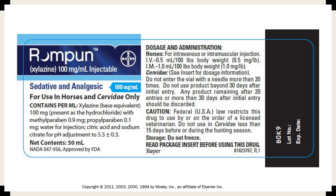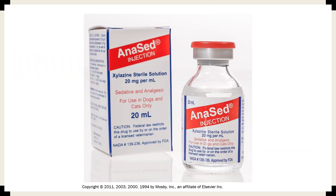Another formulation of Rompun is available as a 100 mg per ml injectable solution, used as a sedative and analgesic in horses and other animals. Anacet is also another brand name of silocene, for use in dogs and cats only, available as a 20 mg per ml concentration.